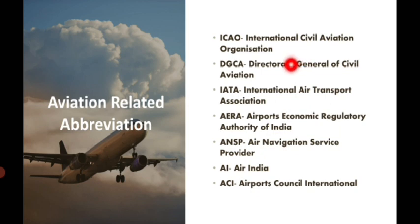DGCA is the Directorate General of Civil Aviation — the regulatory authority in India. DGCA is responsible for regulating air transport, including licensing of personnel, licensing of aerodromes, and making sure that pilots, controllers, and aerodromes are meeting the required standards. In short, DGCA is the regulatory body of aviation in India.